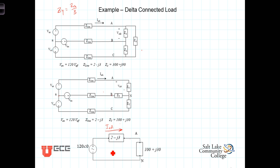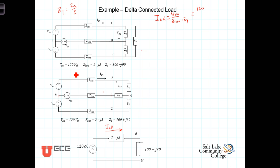Let's determine the line current in this single-phase model. I_aA is simply V_AN, the source voltage, divided by the line impedance plus the Y-equivalent impedance. In this case, we're told the phase voltages at the source are 120 volts effective, so it's 120∠0° for the A phase, divided by the line impedance 2 − j3, plus the load impedance 100 + j30. Doing that calculation, the line current in the A phase is equal to 1.14∠−14.8°.